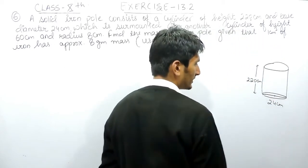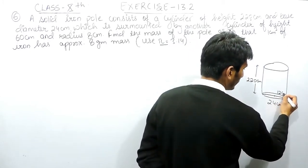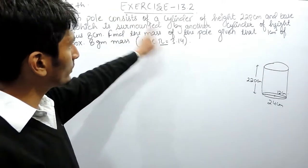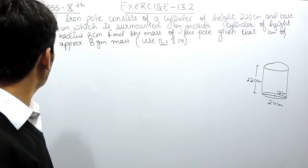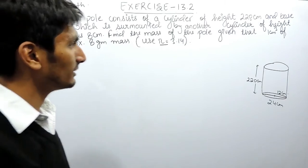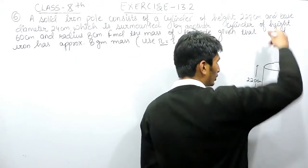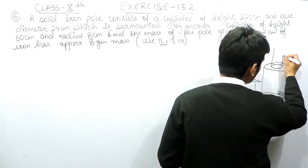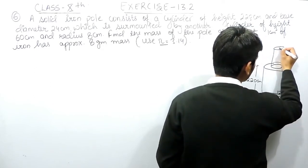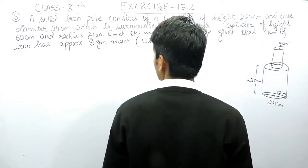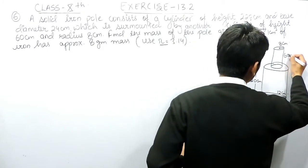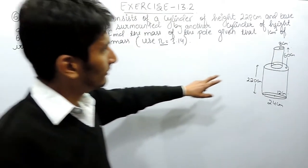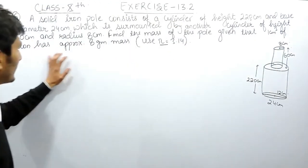Obviously if the diameter is 24 cm, the radius will be half of this diameter which is 12 cm. There is another cylinder surmounted on this cylinder of height 60 cm and radius 8 cm — another cylinder placed on the top with radius 8 cm and height 60 cm. You need to find the mass when 1 cm cube of iron has 8 gram mass.